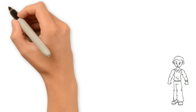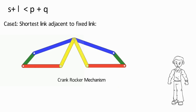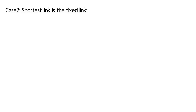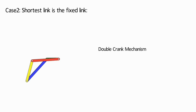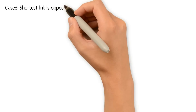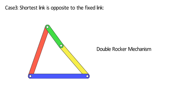Now we will discuss the Grashof condition. We broke the condition into two parts. First is S plus L less than P plus Q. Case 1: the shortest link is adjacent to the fixed link. The mechanism so obtained is known as crank rocker mechanism. Fixed link can be any of the other three remaining links. Case 2: the shortest link is the fixed link. The mechanism so obtained is known as double crank mechanism. The position of the other three links won't affect the nature of the mechanism. Case 3: the shortest link is opposite to the fixed link. The mechanism so obtained is known as double rocker mechanism.